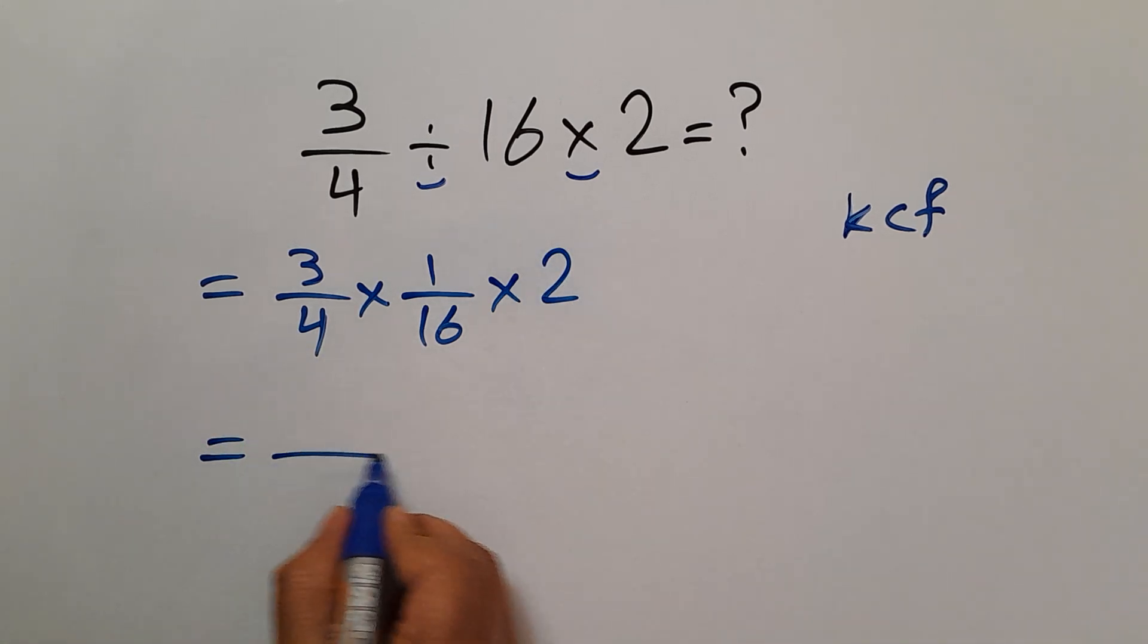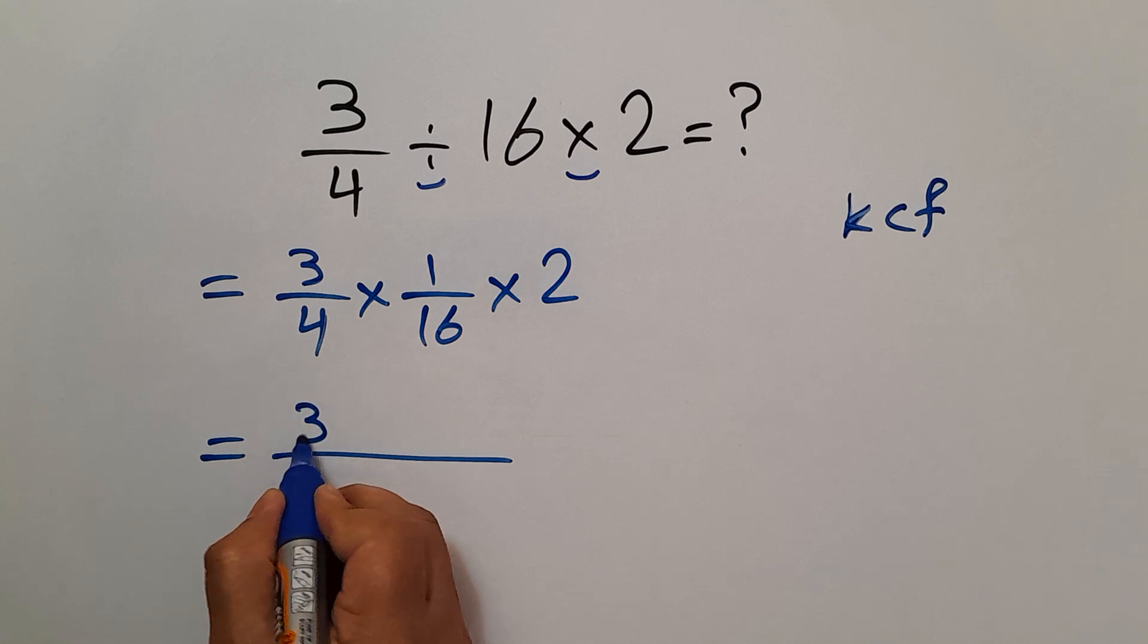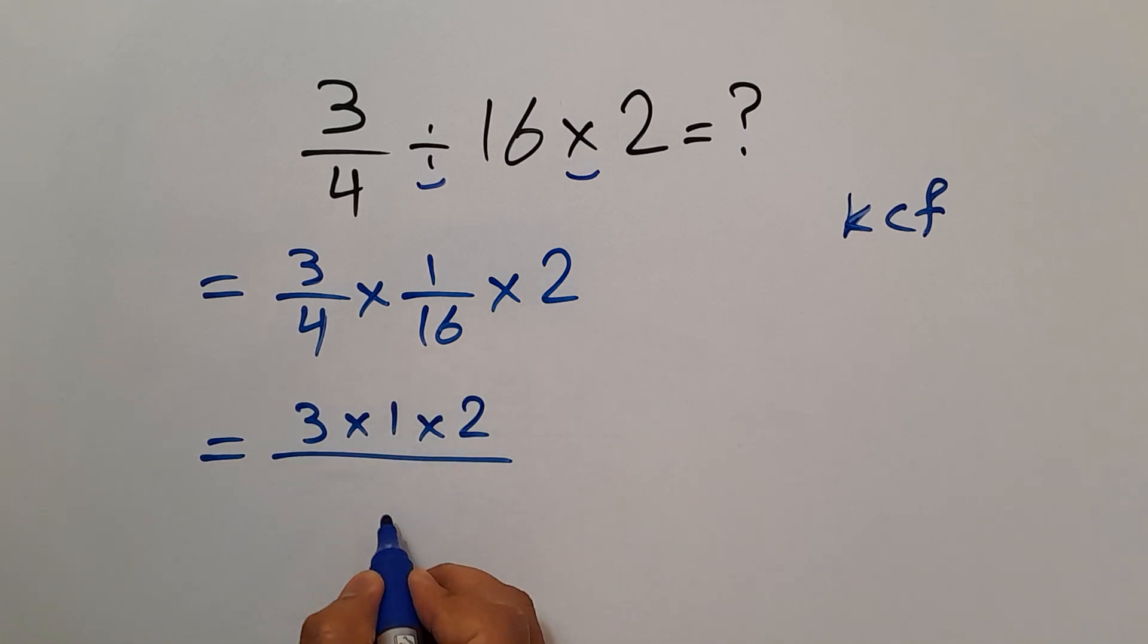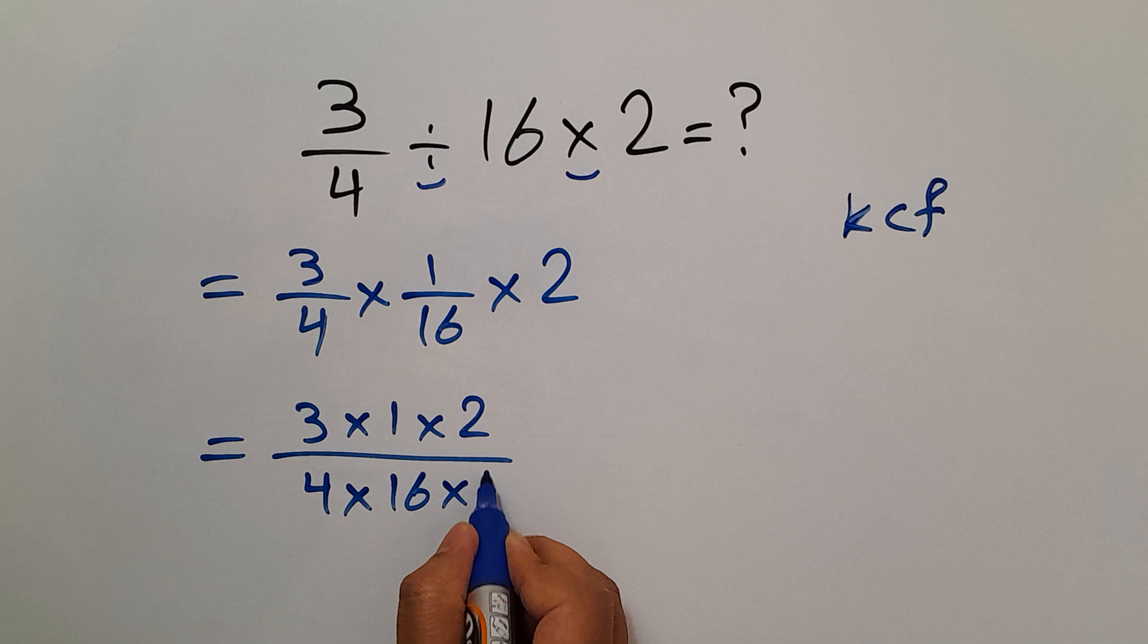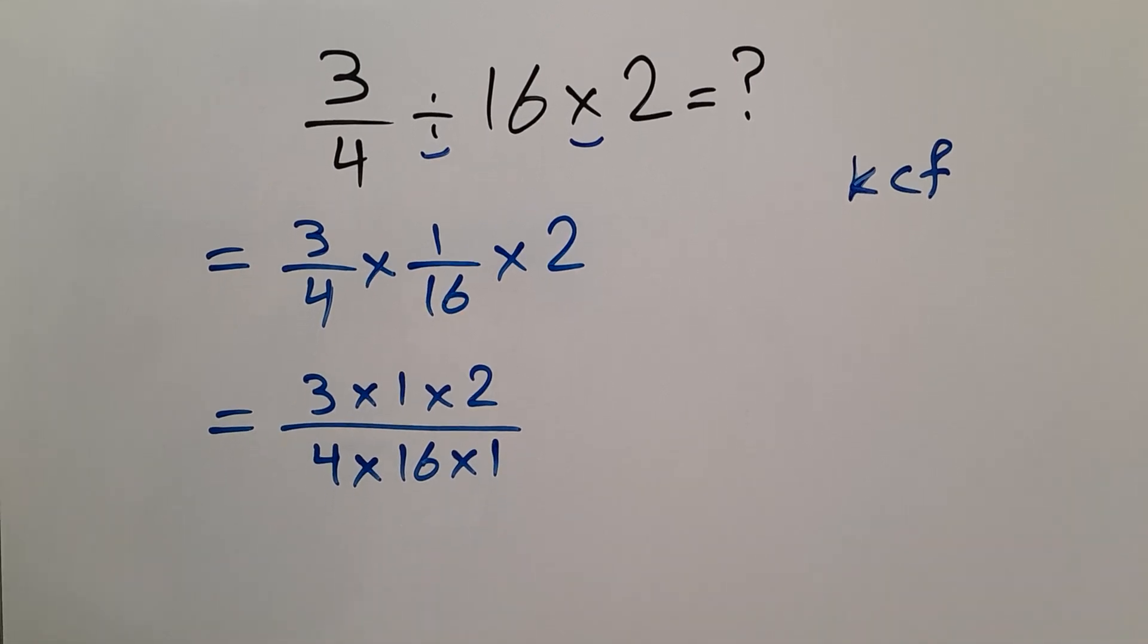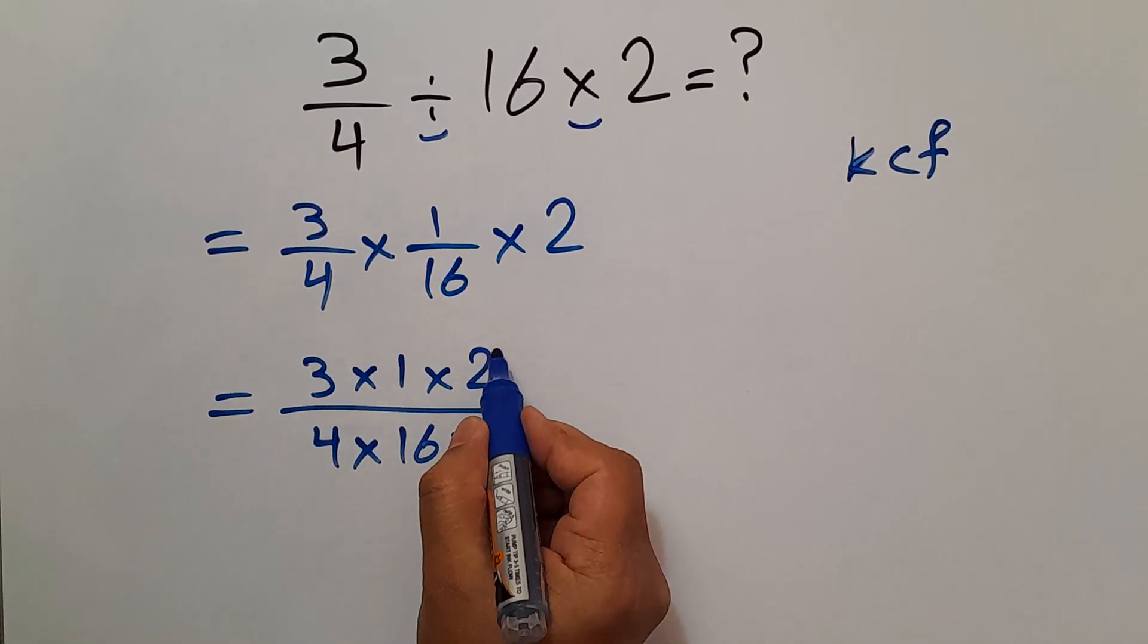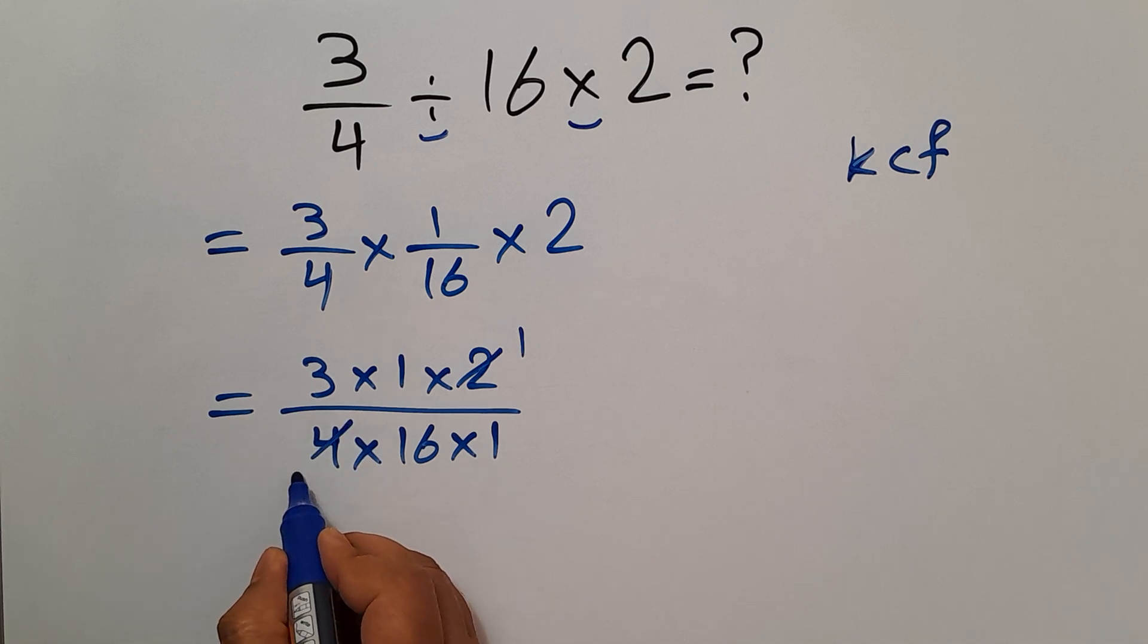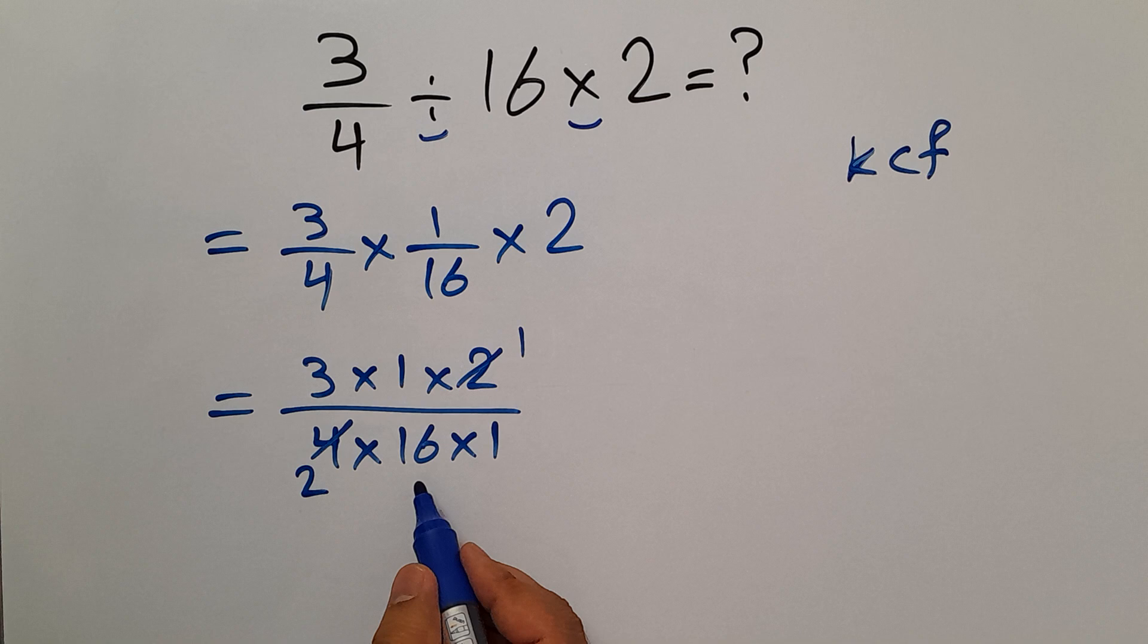2 divided by 2 equals 1 and 4 divided by 2 gives us 2. And this fraction equals 3 times 1 times 1 equals 3 divided by 2 times 16 times 1 gives us 32.